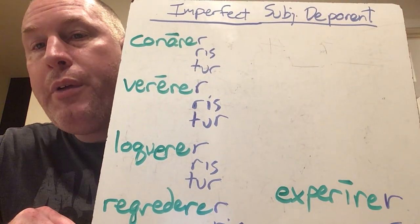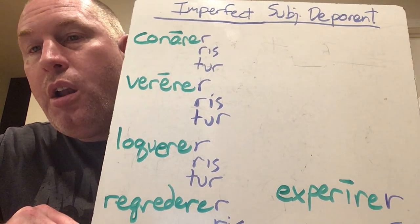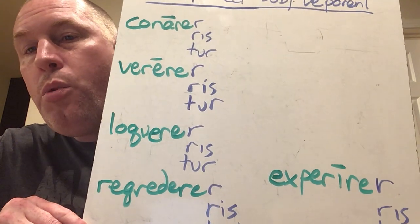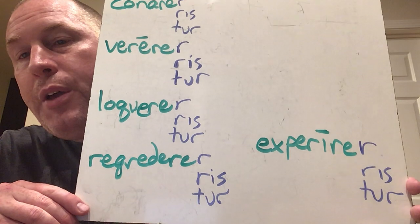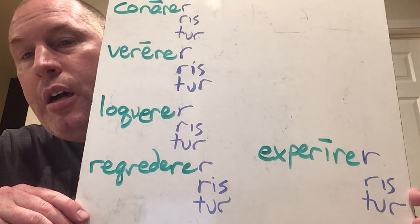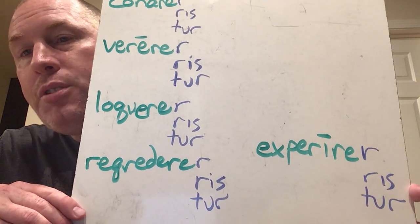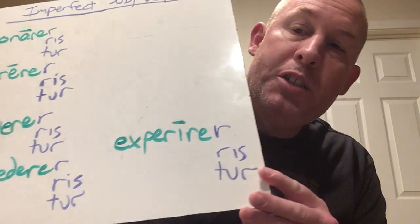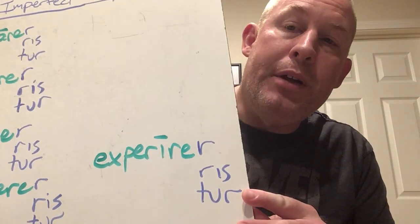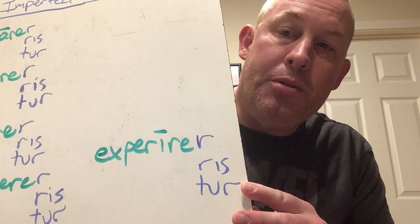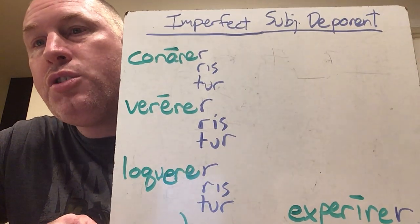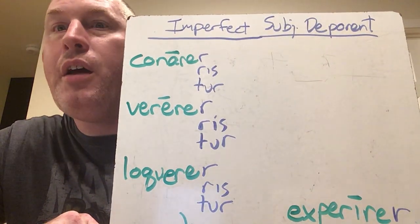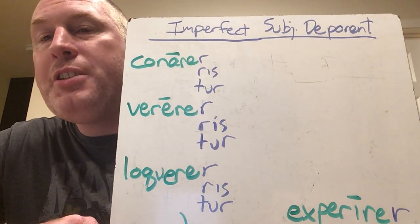Vererer, verereris, vereretur. Loquerer, loquereris, loqueretur. Regrederer, regredereris, regrederetur. And then experirer, experireris, experiretur. And on and on and on — and there's more with the minī and ntur endings. So it's essentially going to look so much more like the non-deponents that it barely deserves mention.